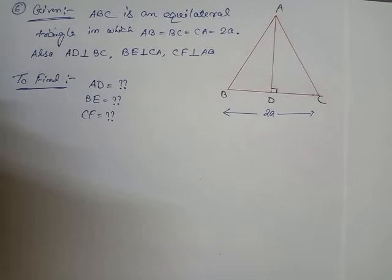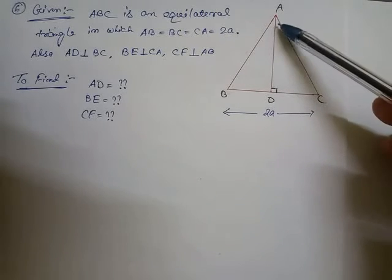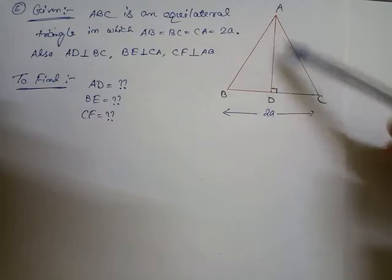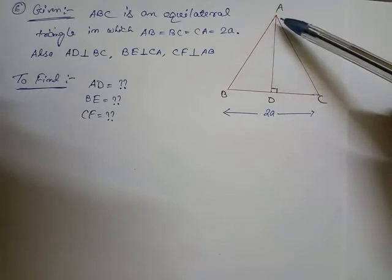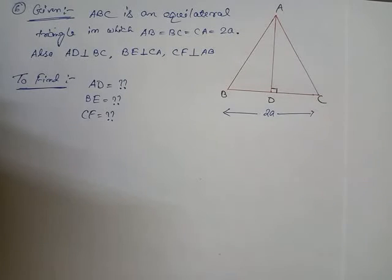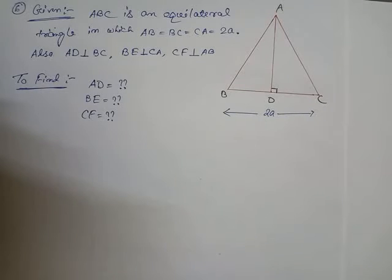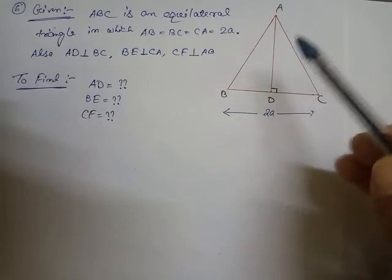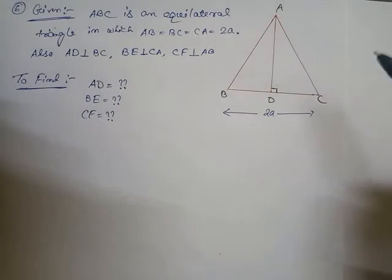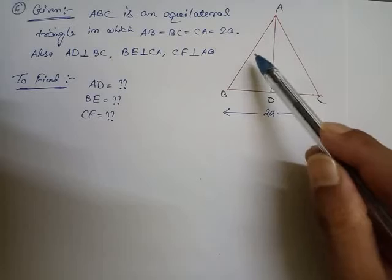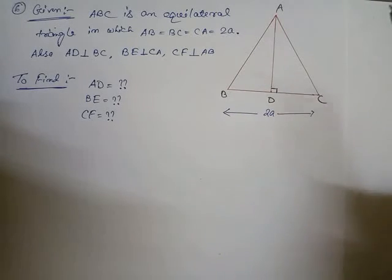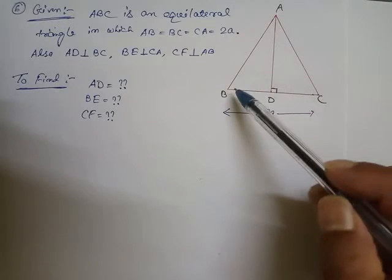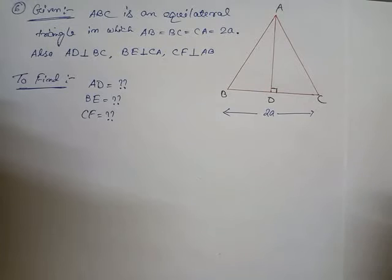The height of an equilateral triangle from a vertex — if I draw a perpendicular to the opposite base — is 90 degrees, so AD is the height. Since it is an equilateral triangle, all heights will be equal: BE and CF will also be equal to AD. That's why I have not drawn the other two altitudes. If I find only AD, it is equivalent to BE and CF.